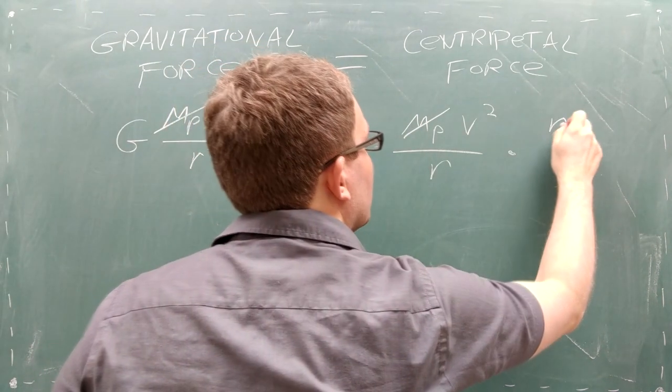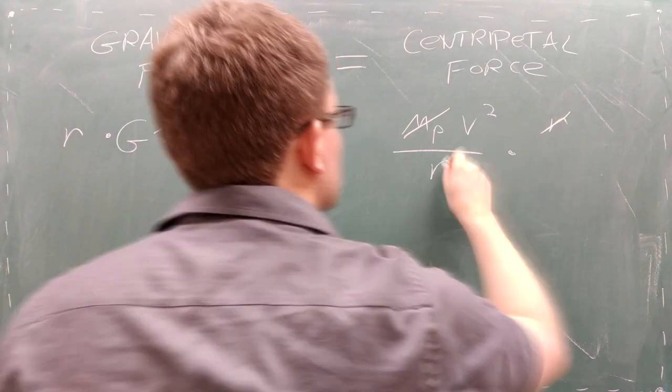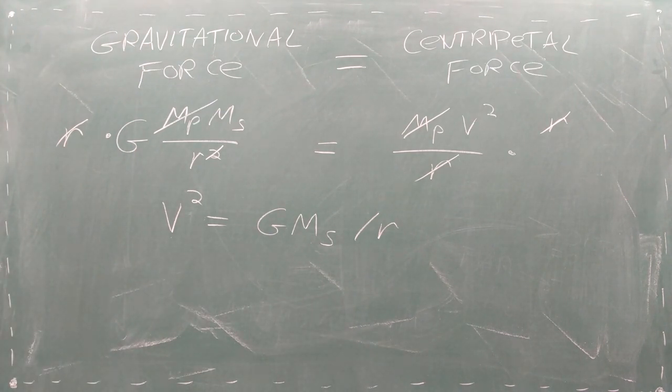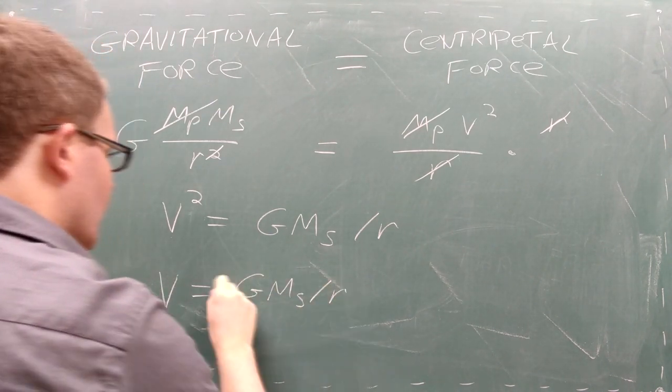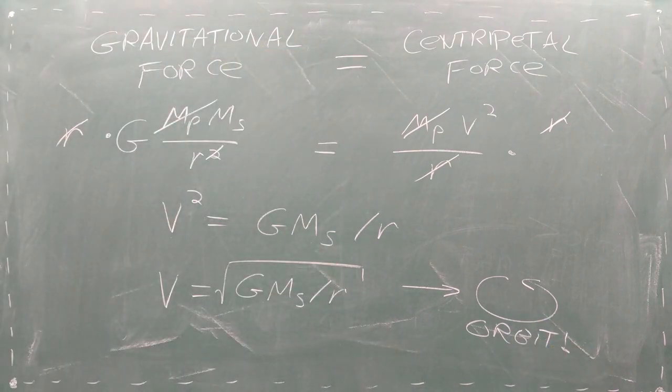You can then rearrange this equation to calculate the velocity that the planet needs in order to make a nice circular orbit. All you need to know is the mass of the star and the distance where you want to place the orbiting object. We can use this in our code to generate many orbiting bodies like in an asteroid belt.